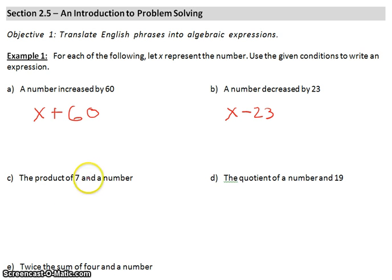Now we look at C. The product of 7 and a number. We can write this various ways, but product means multiplication. I would prefer that you write it as 7X, 7 times X. You do not have to show the multiplication sign.